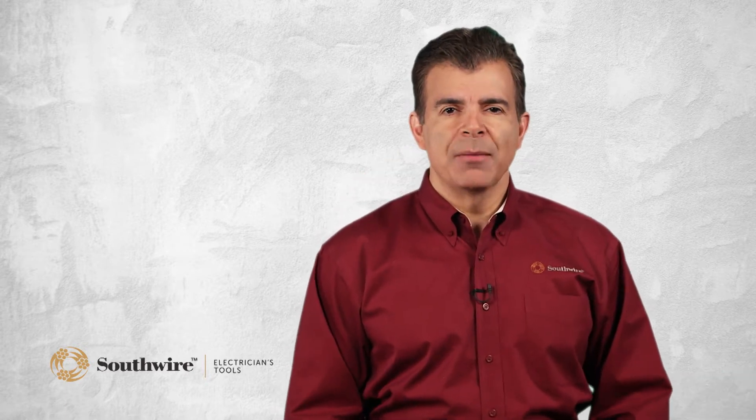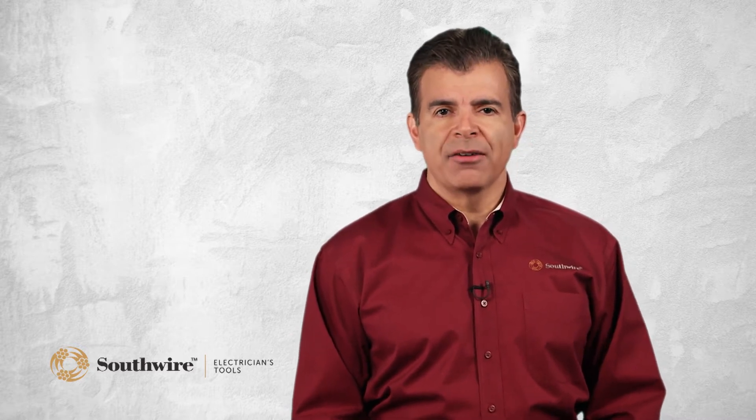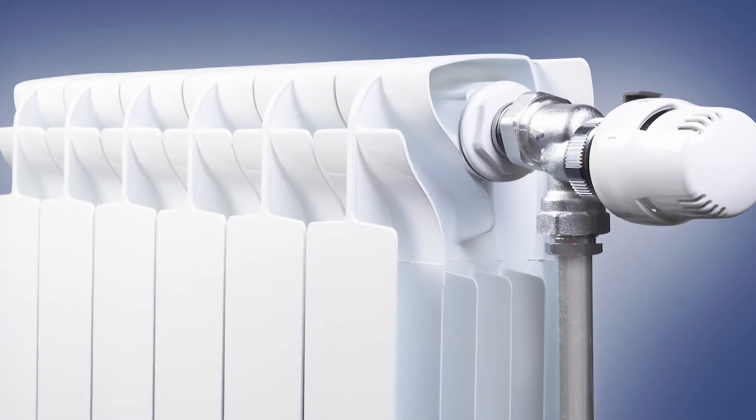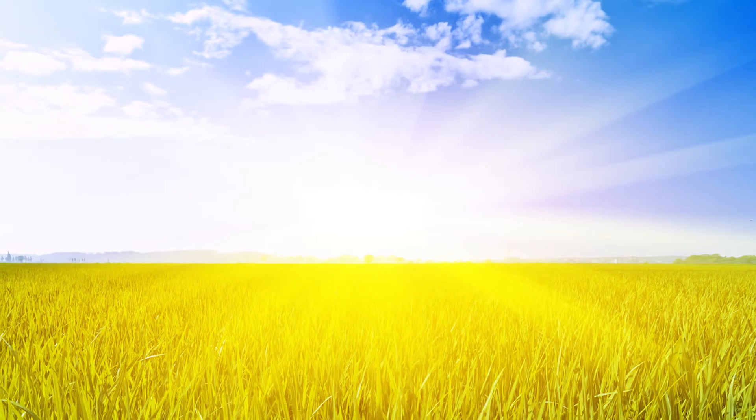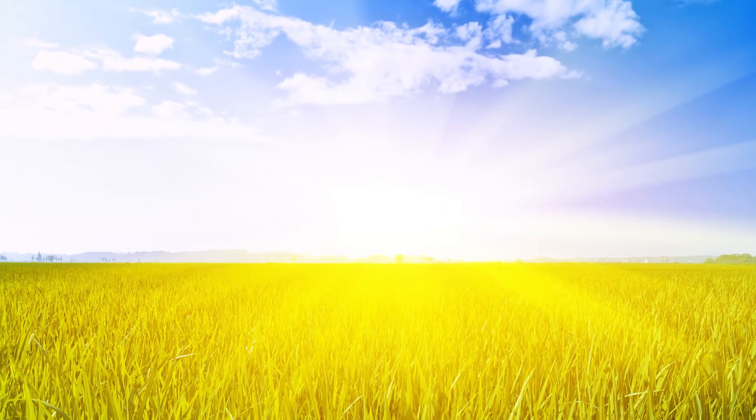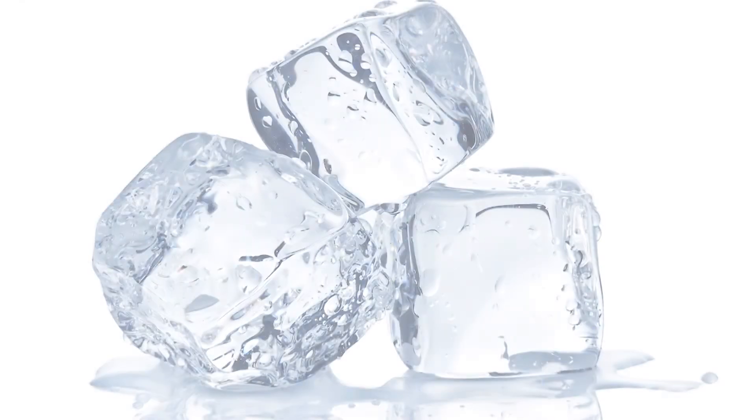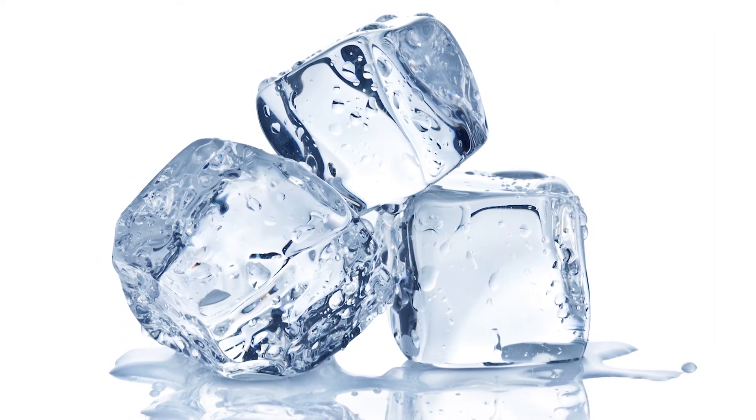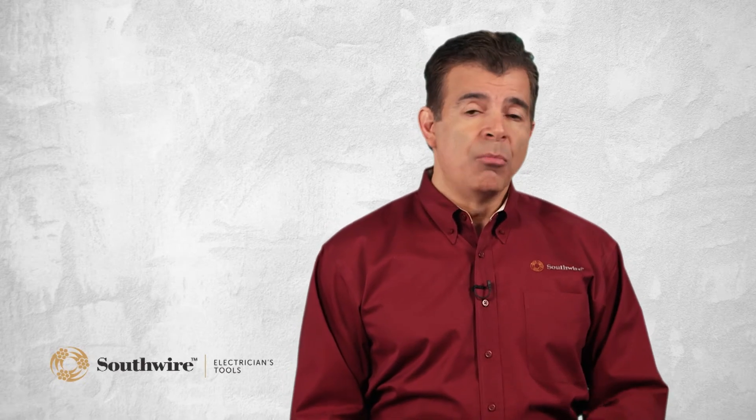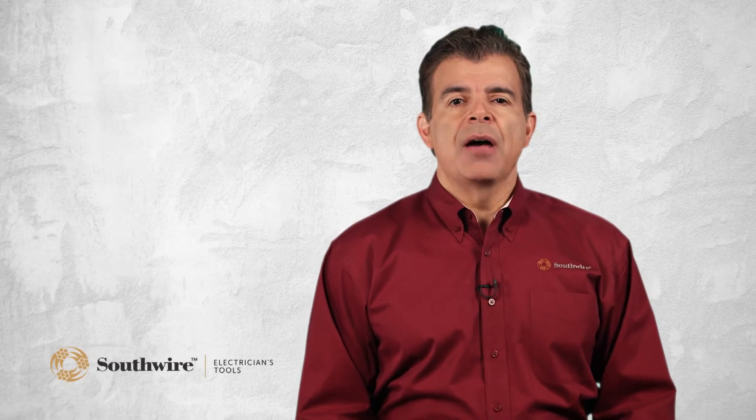IR thermometers measure temperature by detecting infrared energy. We experience infrared energy every day. When we stand close to a radiator or fire, or go outdoors on a sunny day, the heat we feel is infrared energy. All objects emit infrared energy. Even a very cold object, such as an ice cube, emits infrared energy. As an object gets hotter, more infrared energy is emitted. This phenomenon is very predictable, which allows calibrated temperature readings to be made by measuring the amount of infrared energy an object emits.